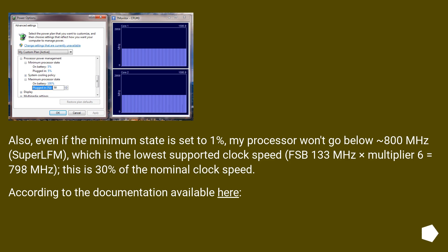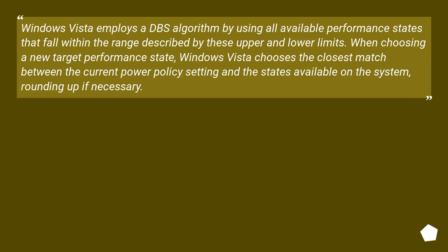According to the documentation, Windows Vista employs a DBS algorithm using all available performance states that fall within the range described by these upper and lower limits. When choosing a new target performance state, Windows Vista chooses the closest match between the current power policy setting and the states available on the system, rounding up if necessary.